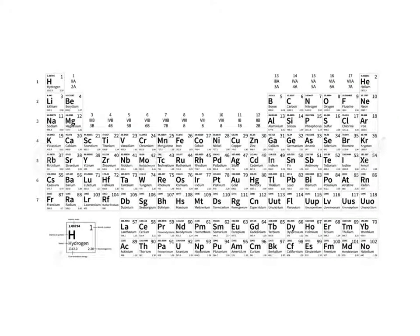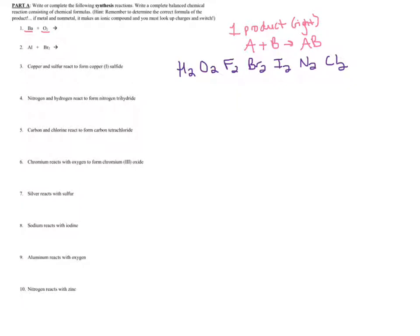I memorize them as 'Hofbrinkl' — H-O-F-B-R-I-N-C-L. Those seven elements, when found by themselves in a chemical reaction, need to have a subscript of two. You can also see them on the periodic table, where they make a seven shape, going from nitrogen to fluorine, down to iodine, and also remembering hydrogen. So if you ever see one of these seven Hofbrinkl elements by themselves, write them with a subscript of two; otherwise, just use the element symbol alone.